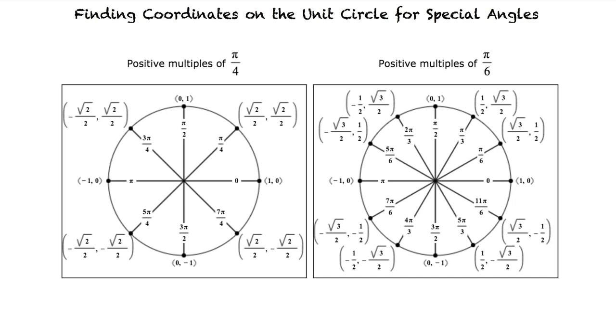So, let's find the terminal point on the unit circle determined by 3 pi fourths radians. I know 3 pi fourths is a multiple of pi over 4, and it looks like the figure on the left shows that the terminal point would be negative square root of 2 over 2, square root of 2 over 2. That's right.